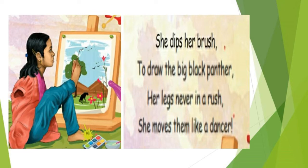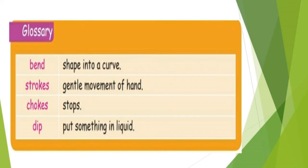In this third stanza, 'brush' and 'rush' are rhyming words, and 'panther' and 'dancer' are another rhyming pair. In this poem, the poet exposes the self-confidence of the girl by doing the painting. Glossary: 'bend' — shape into a curve; 'strokes' — gentle movement of hand; 'chokes' — stops; 'dip' — put something in liquid.